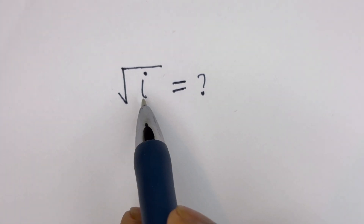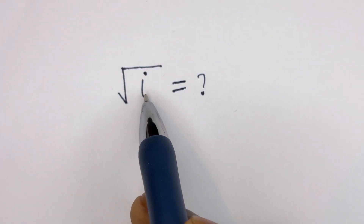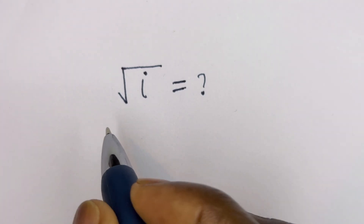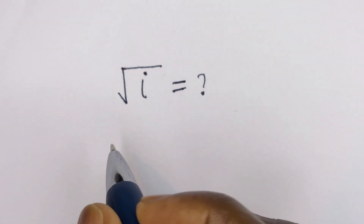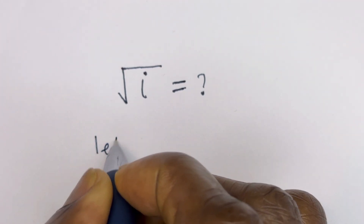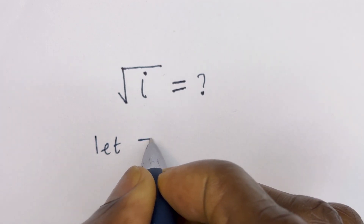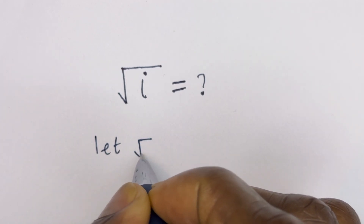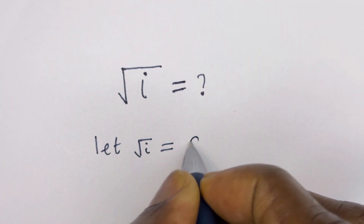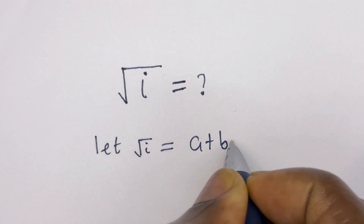Hello, how to solve this nice math problem: square root of i is equal to what? Now, let's take note of this method. From here, let's say square root of i is equal to a plus bi.